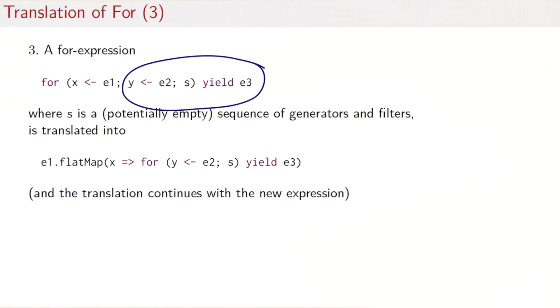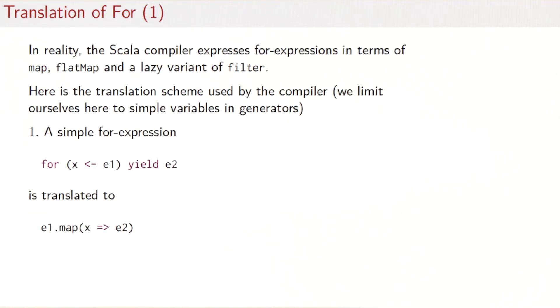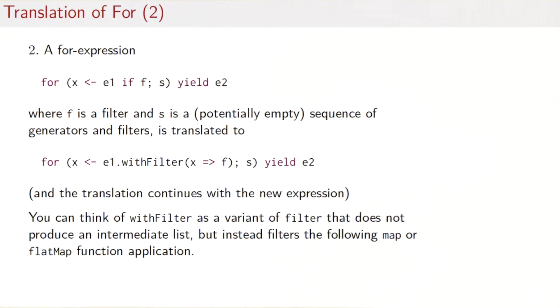So what happened in the first case was a direct translation into a map. What happened in the second and third case was that we translated the for expression into one that has one less element. So it either has one fewer filter or one fewer generator.